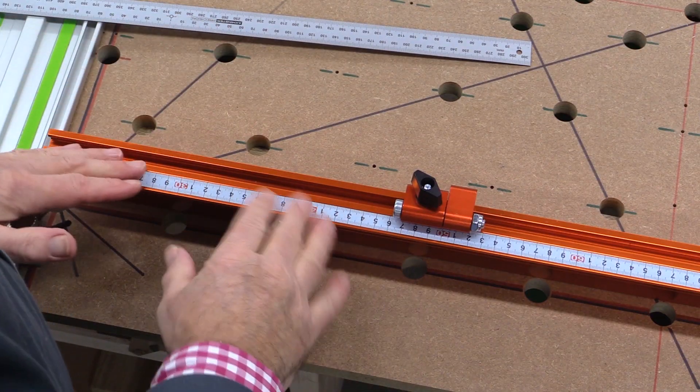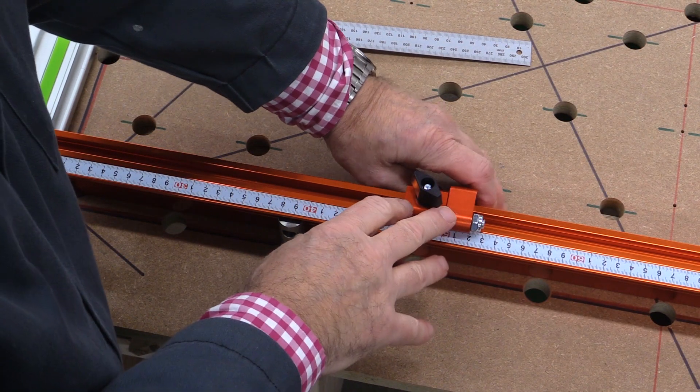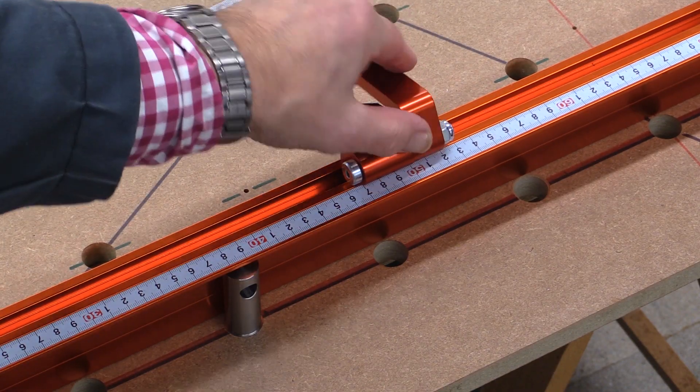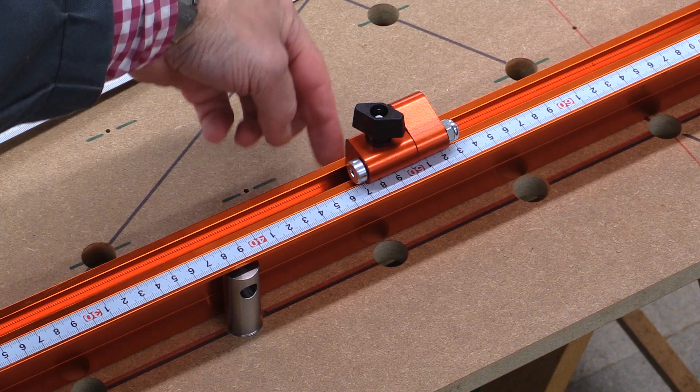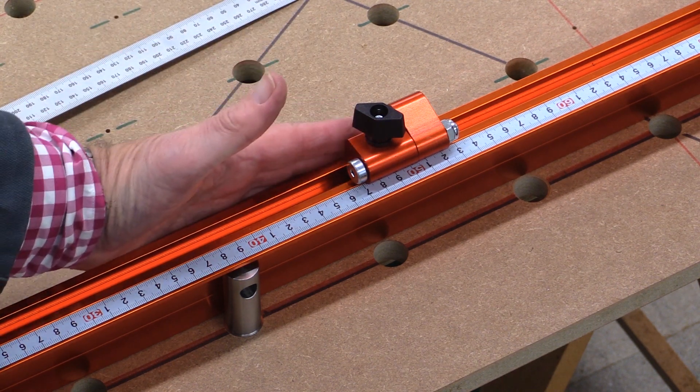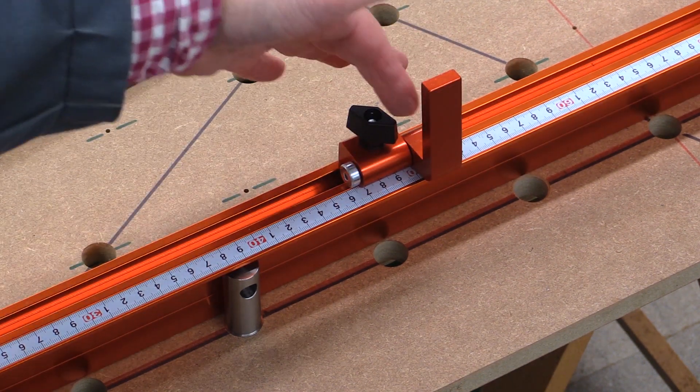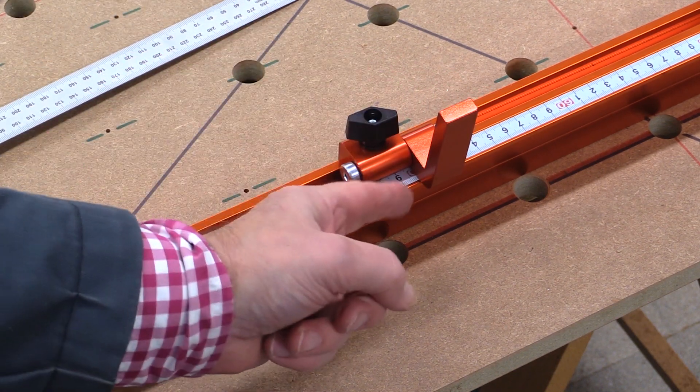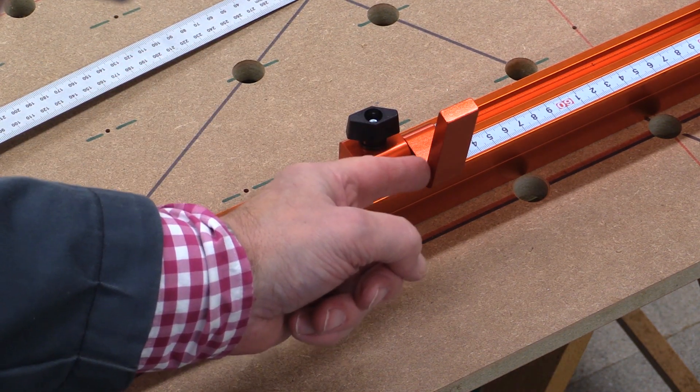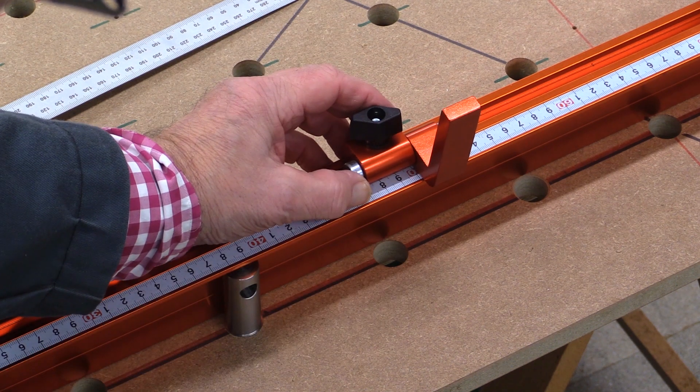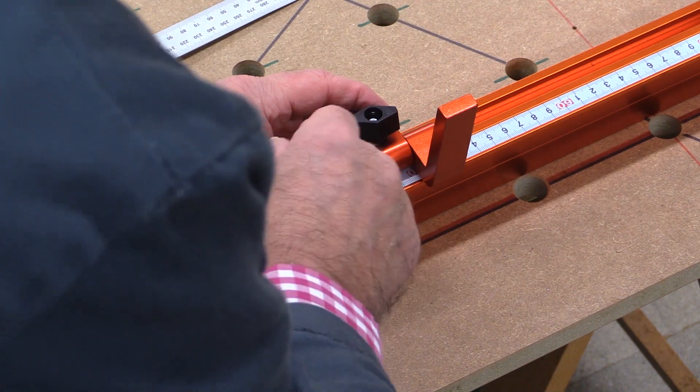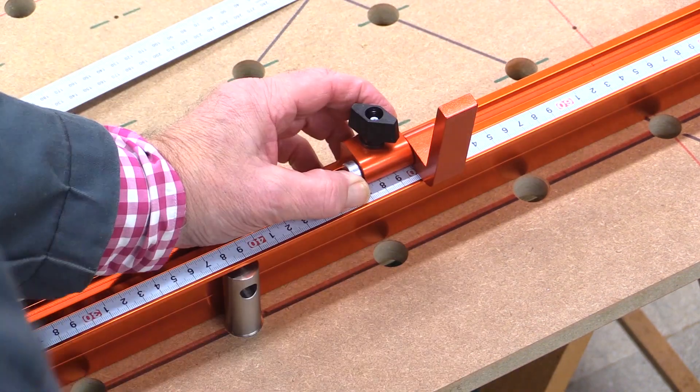Now for the setup process, I want you to look closely at the stop here. This part of the end stop, when it's in that position there, is what you push your piece of stock against. In setting up this stop so you can cut to a given length, you look for the intersection of this surface here with the measurement on the tape. And I'm now setting this exactly on the 500 millimeter mark.